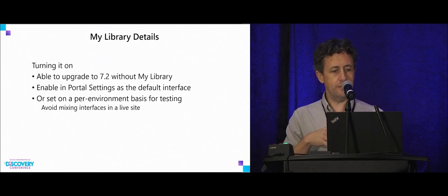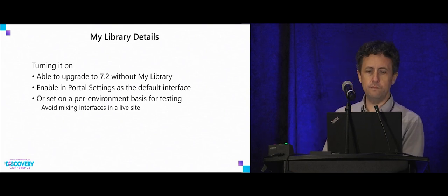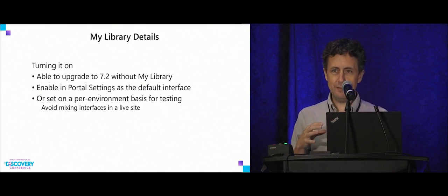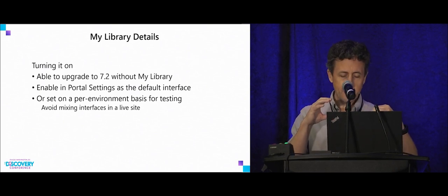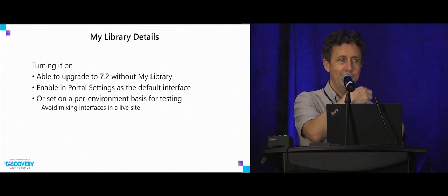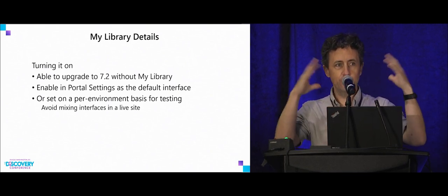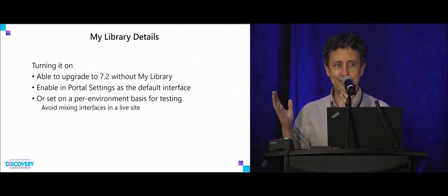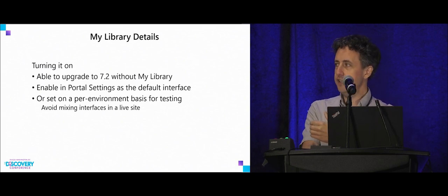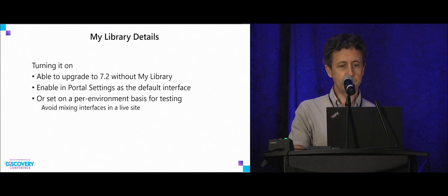You might make a copy of an environment, set it to My Library, and see what it's like. On a production site, you wouldn't want to mix My Library and non-My Library environments, because the My Library environment will have the popup and it will list all environments — including non-My Library ones — and the user might click one and the whole interface changes. So the per-environment setting is expected to be used for testing, and once you're ready to move to it, you'd turn everything on at the portal level.